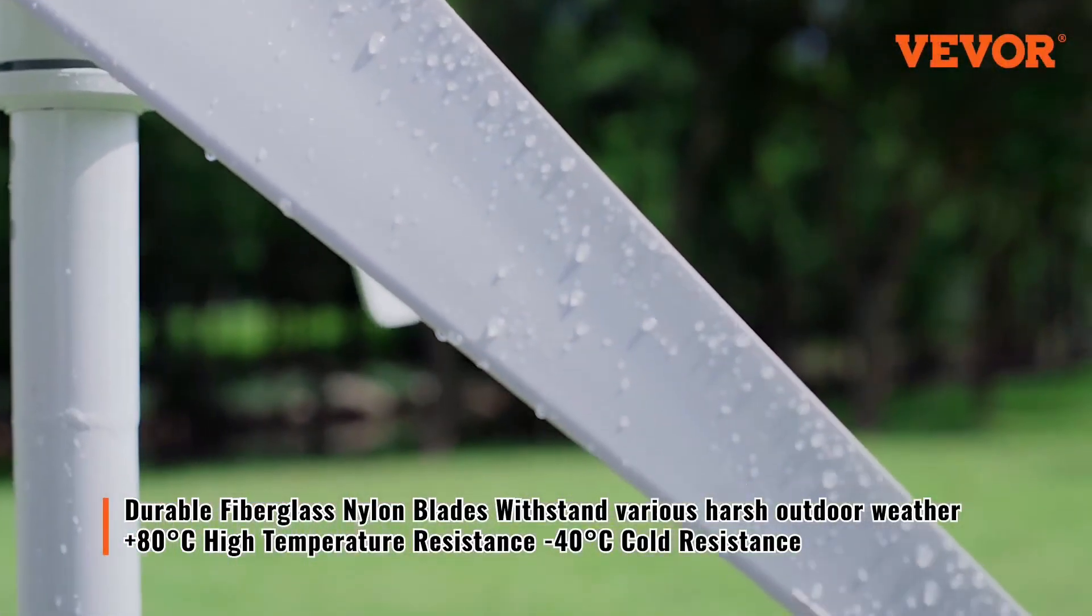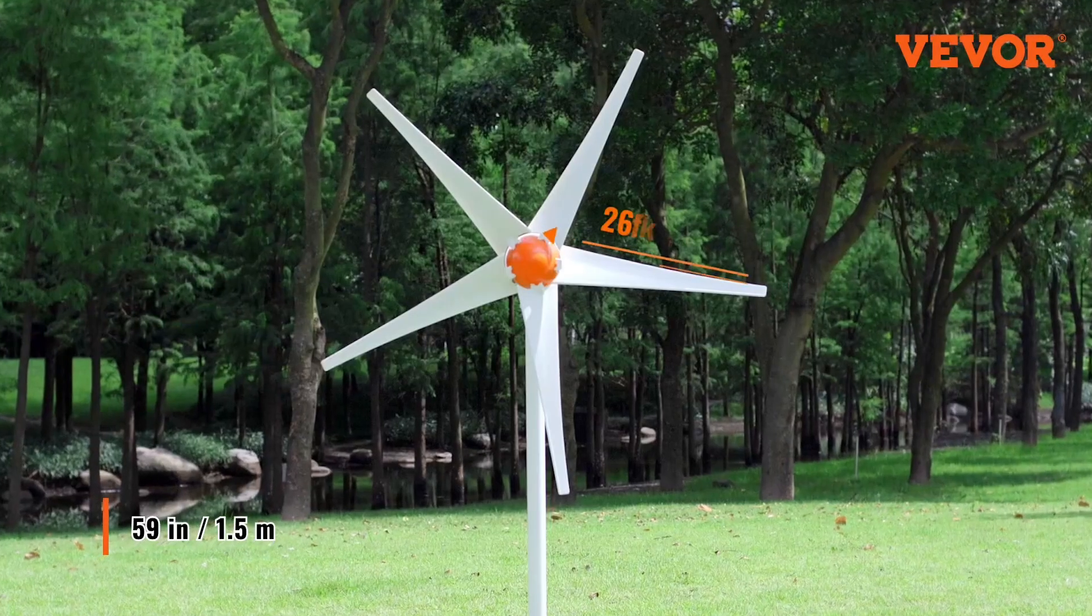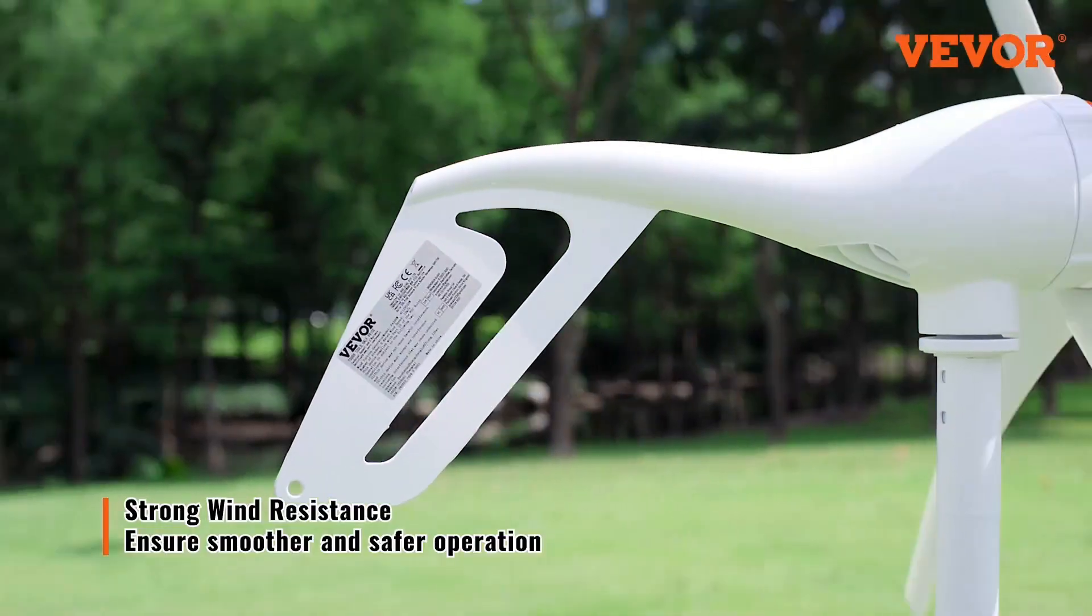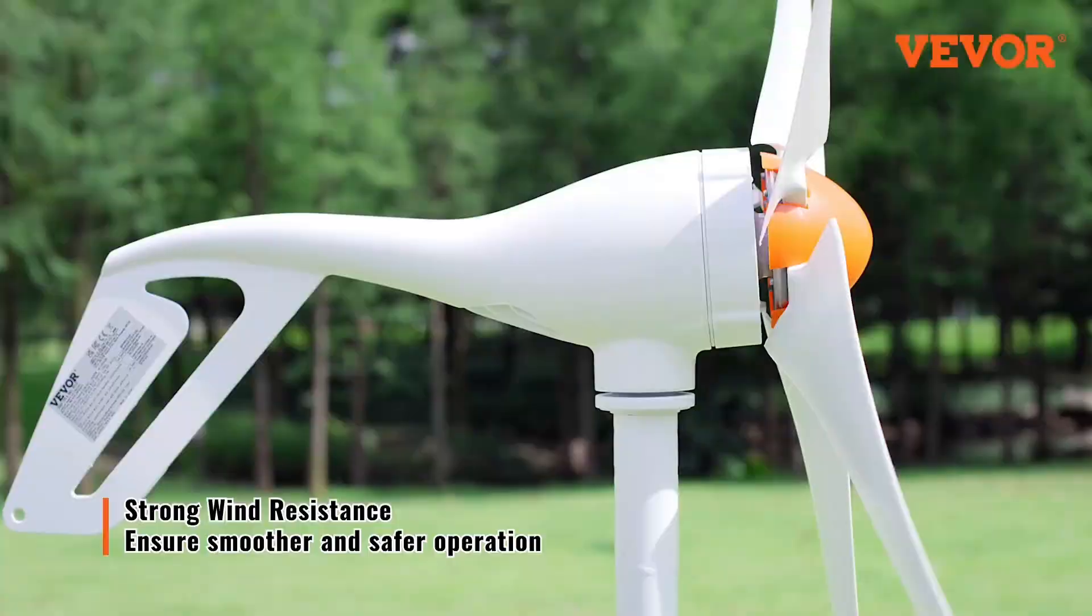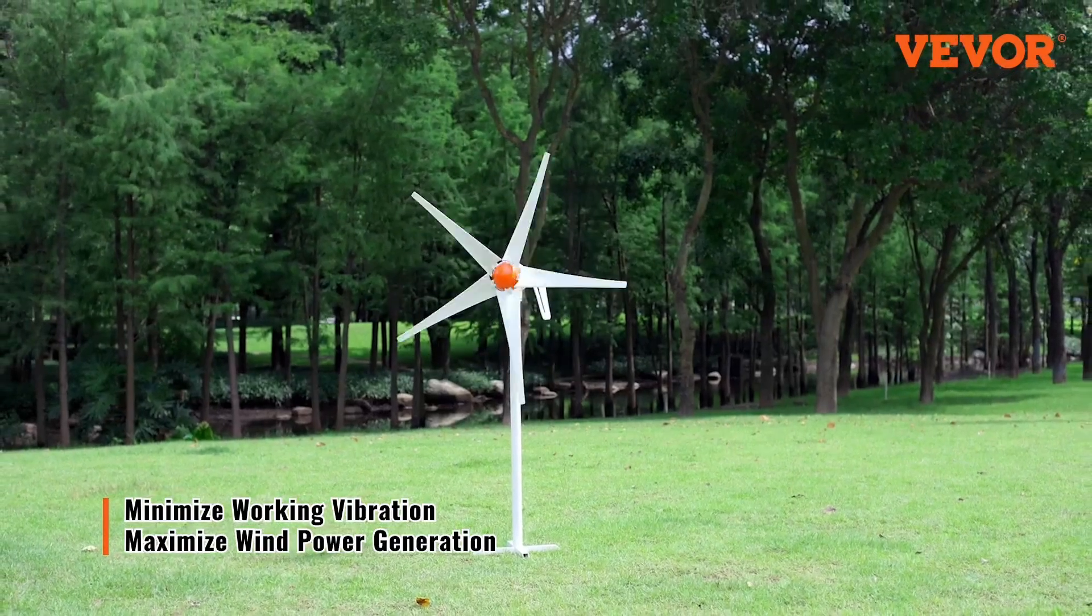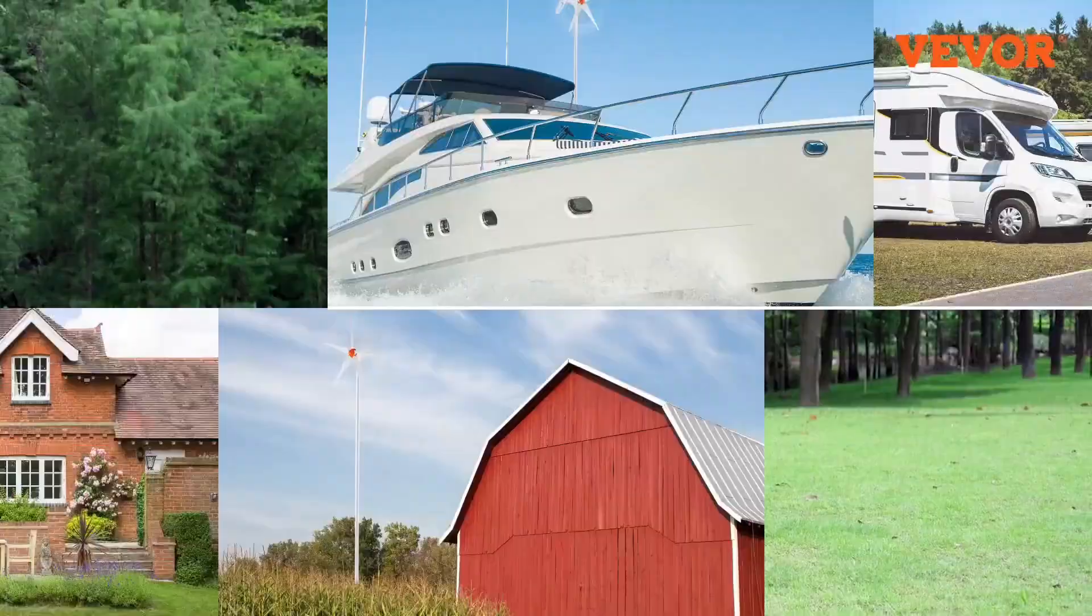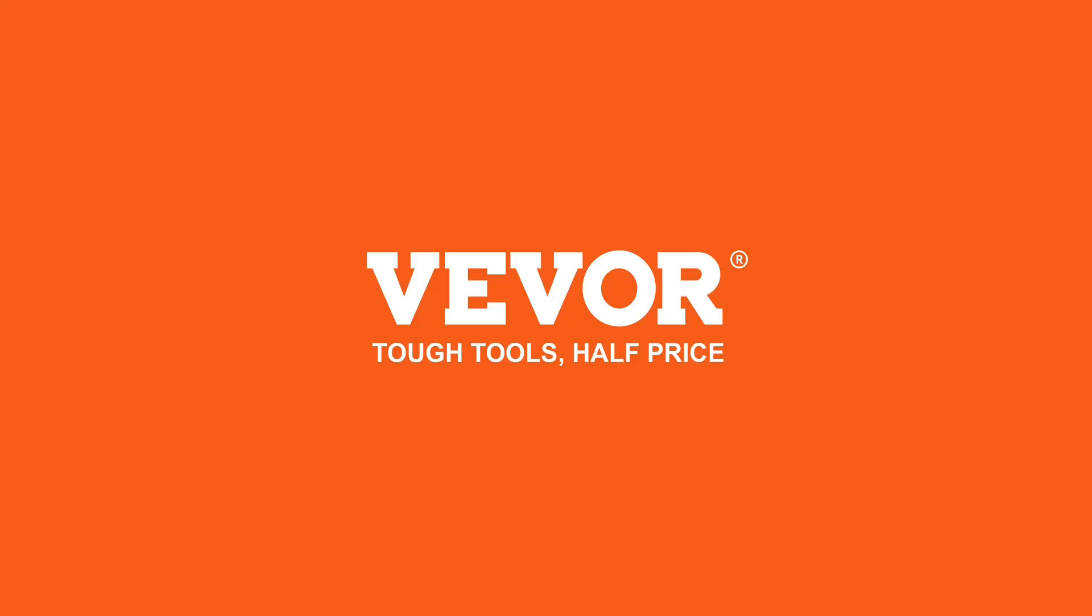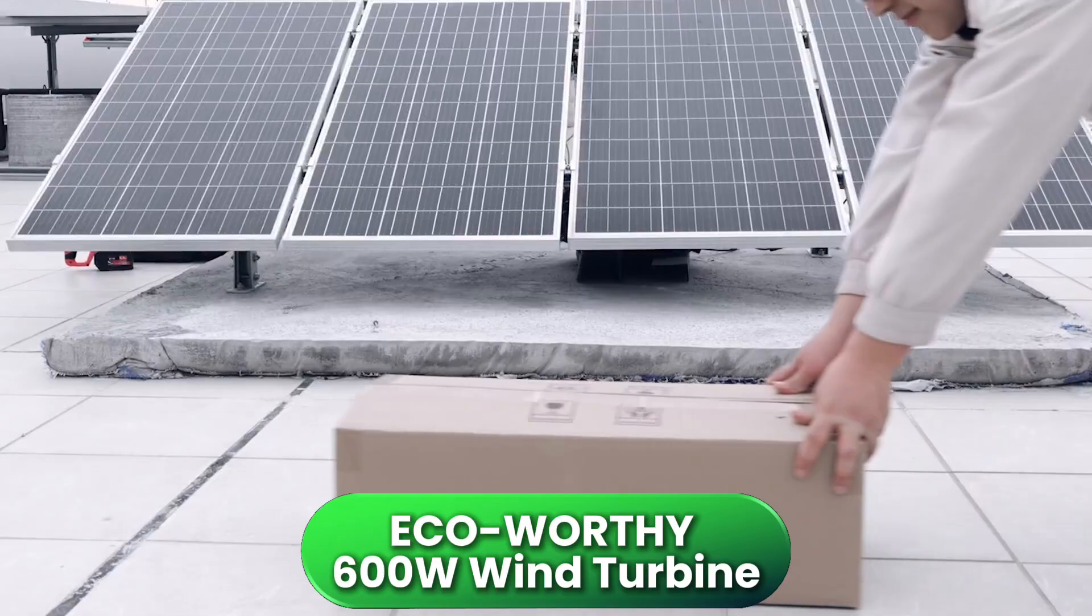In actual use, you can expect between 50 to 150 watts in winds around 12 to 20 miles per hour, which makes it ideal for keeping 12-volt battery banks charged in remote or mobile setups like tiny homes or RVs. Now, the advertised 500-watt rating is optimistic. Don't expect to hit that without gale force winds, but the MPPT controller does help extract usable power efficiently.